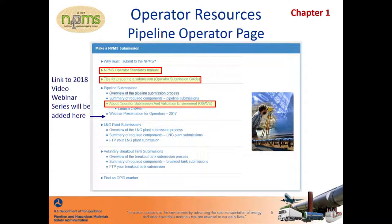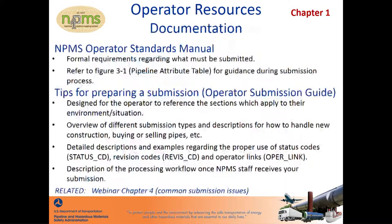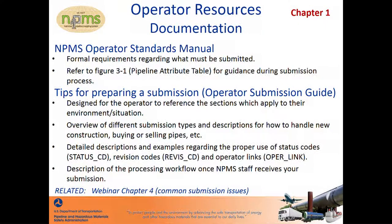Chapter 3 of this webinar series is an overview of the OSAVE application. The pipeline operator section of our website is also where you can access HCA data or request a copy of your NPMS data. The two primary documents every operator should download and use during the NPMS submission process are the Operator Standards Manual and the Operator Submission Guide. The Operator Standards are the formal requirements referenced in 49 CFR Parts 191.29 and 195.61. The regulations state that every NPMS submission must include geospatial data, attributes, metadata, and a transmittal letter appropriate for use in the NPMS, and that acceptable formats are specified in the Operator Standards Manual.